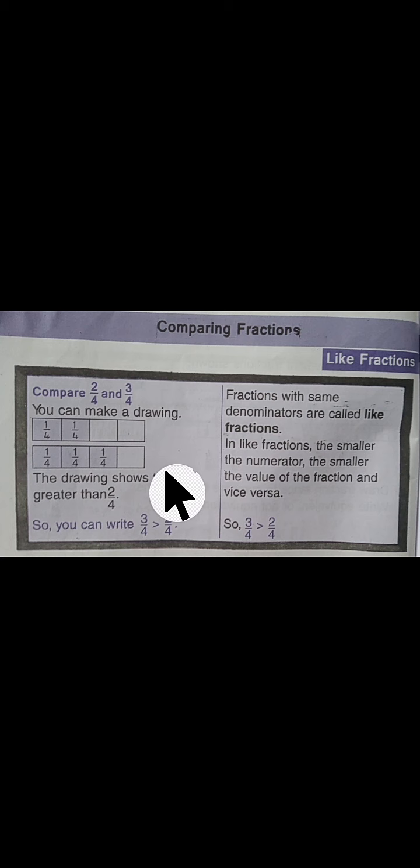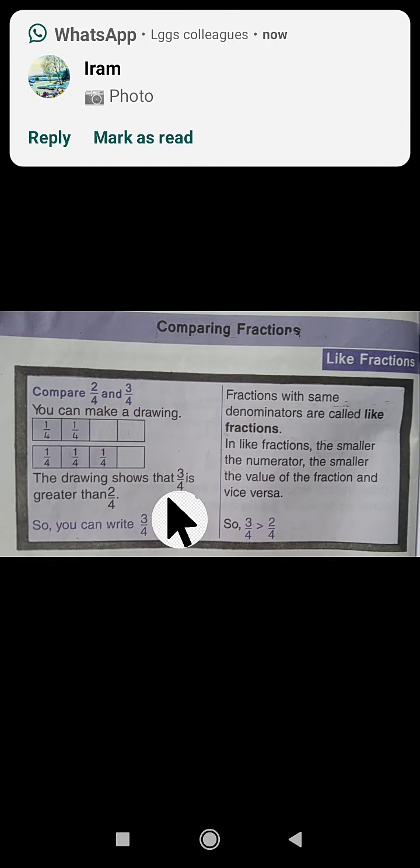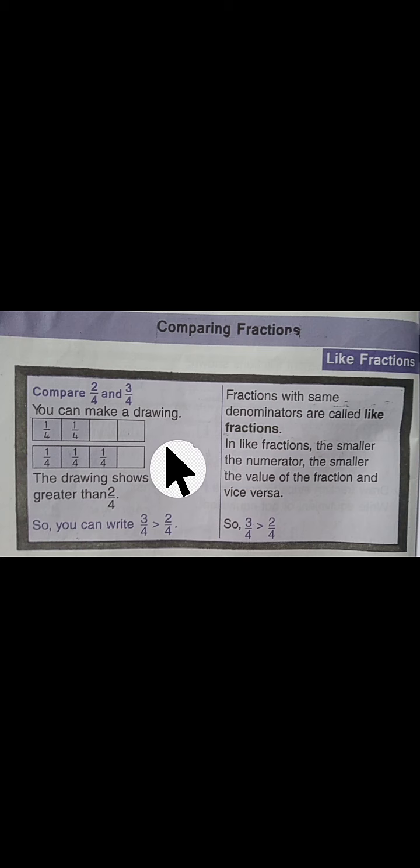You can see that there are two strips. Each one is divided into four equal parts. One strip has two parts shaded and the other has three parts shaded. You can see which shaded portion is greater — that fraction will be greater. You can also see fractions in just numerical form. Check that the denominator is the same. So 3 by 4 and 2 by 4 are like fractions because the denominator is the same.